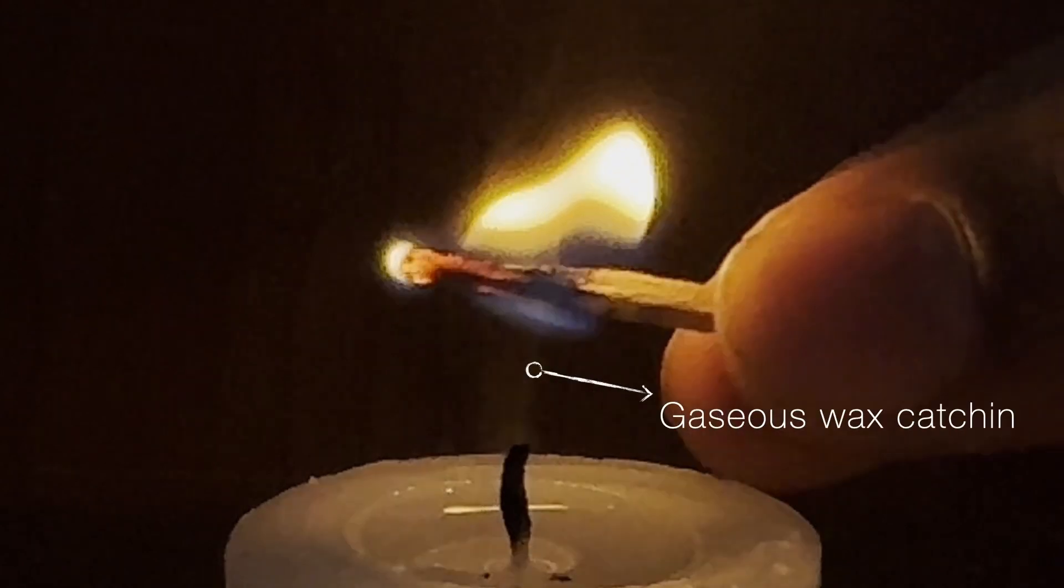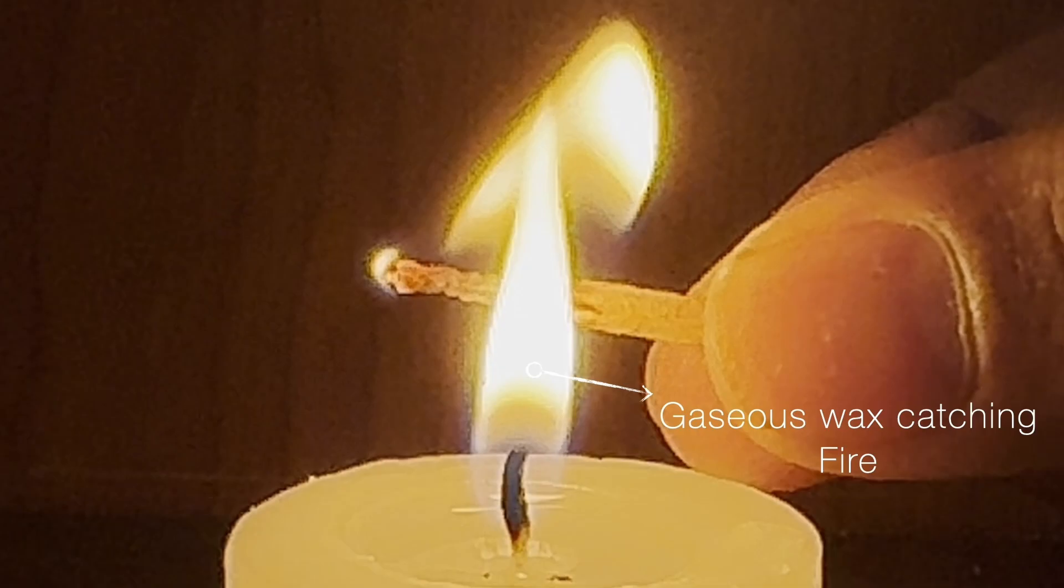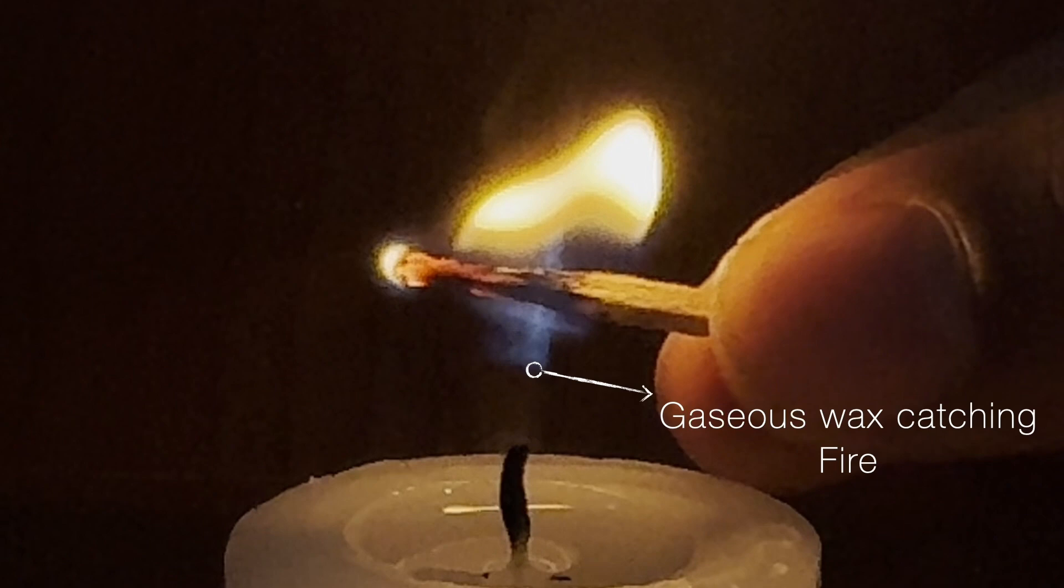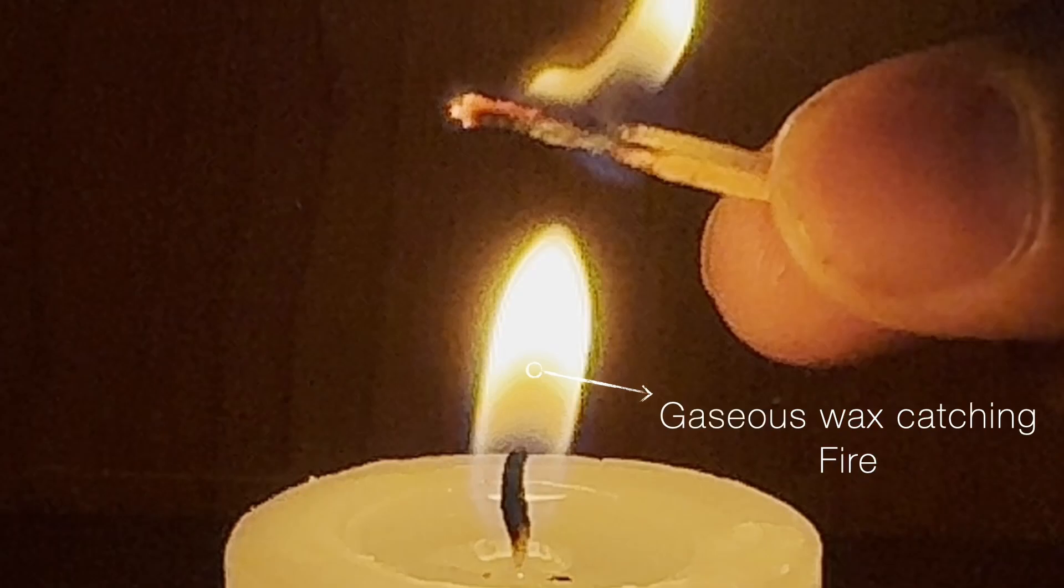Here is what's happening: when you blow out the candle, the gaseous wax, the vapor, keeps rising from the wick for a few seconds. If you bring a flame close right away, it doesn't touch the wick. Instead, the gaseous wax is what is catching fire here, and then the flame travels down the vapor trail, relighting the wick.